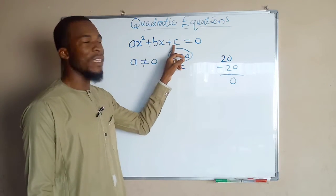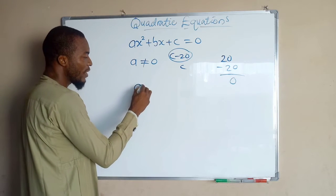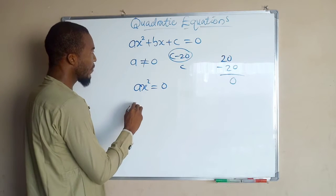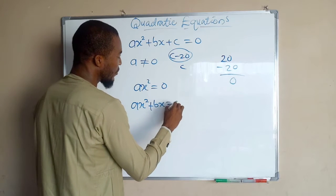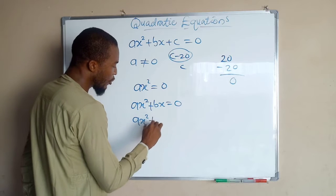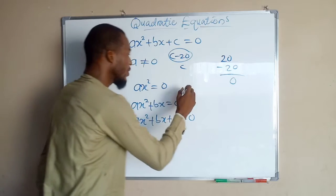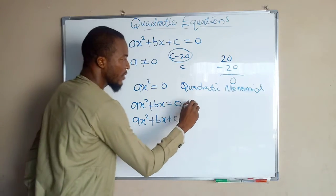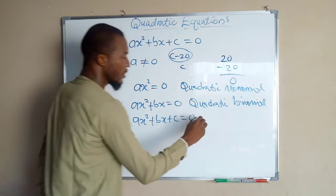Since b and c can be equal to 0, we may have a quadratic equation in the form of ax squared equal to 0 — this is called a quadratic monomial. Or we may have ax squared plus bx plus c equal to 0 — this is a quadratic binomial or quadratic trinomial depending on the terms present.